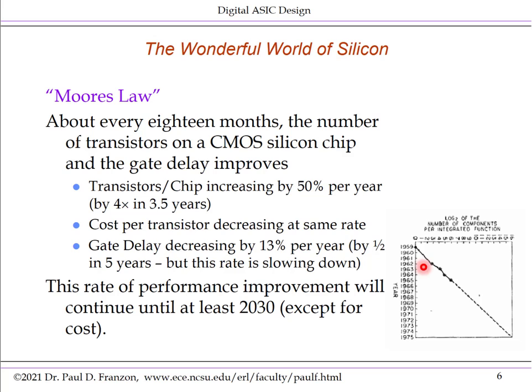He traced this from 2 to the 0 — which is of course 1 transistor — through to 2 to the 6, and observed that this exponential growth relationship was in existence, and predicted it would continue. Of course, few thought it would continue for over 50 years, but it has, and it will continue even beyond the end of this decade.